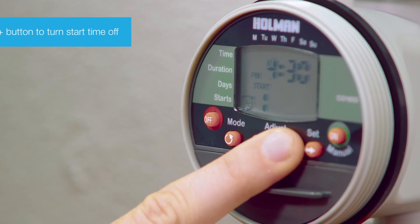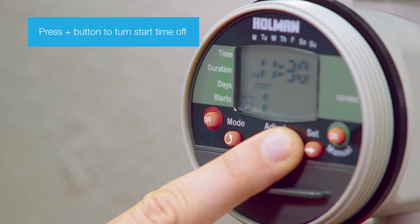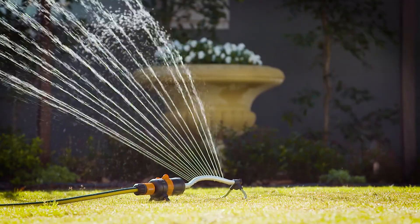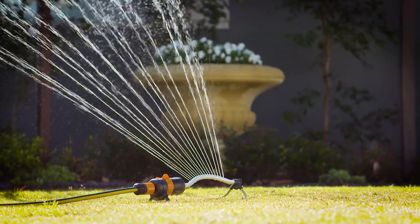To turn a start time to off, keep pressing the plus button until off appears. To return to the main screen, press the mode button again. Your 1605 Pro Series tap timer is now programmed.